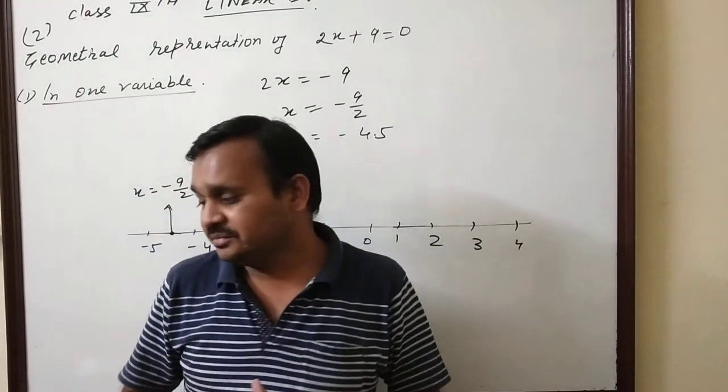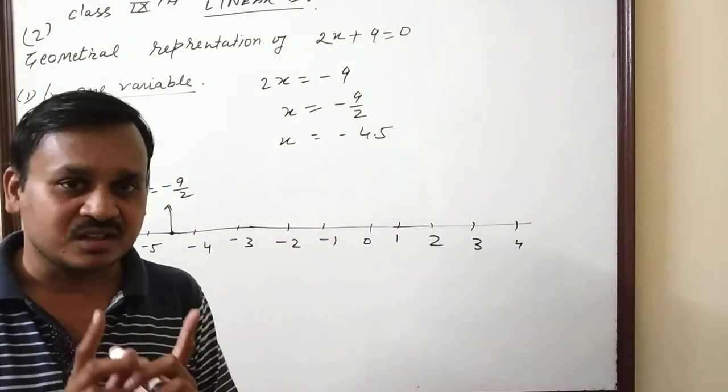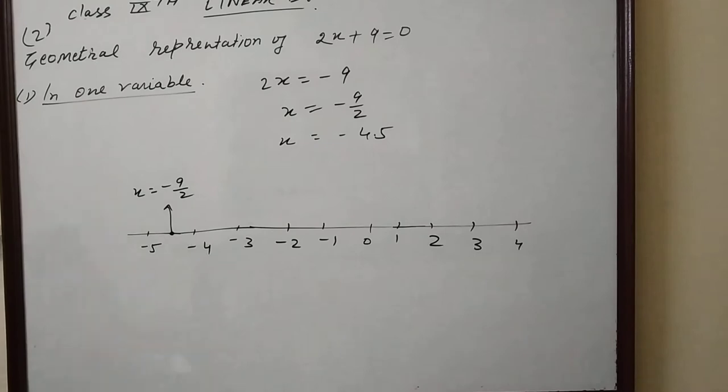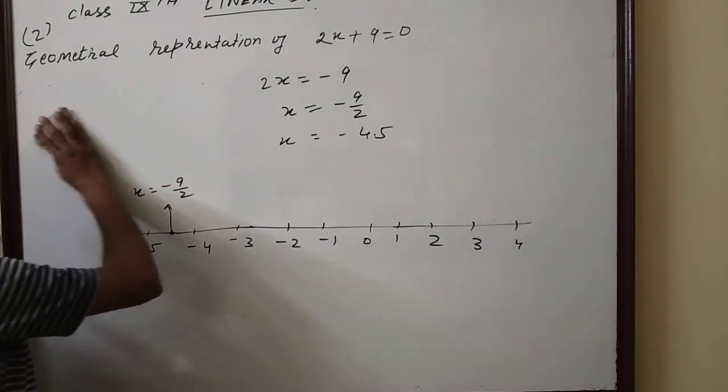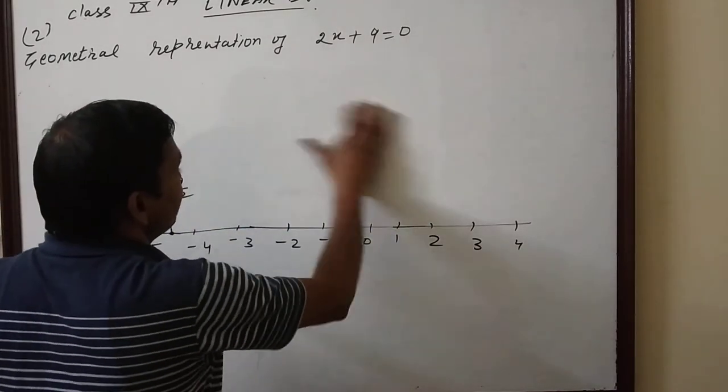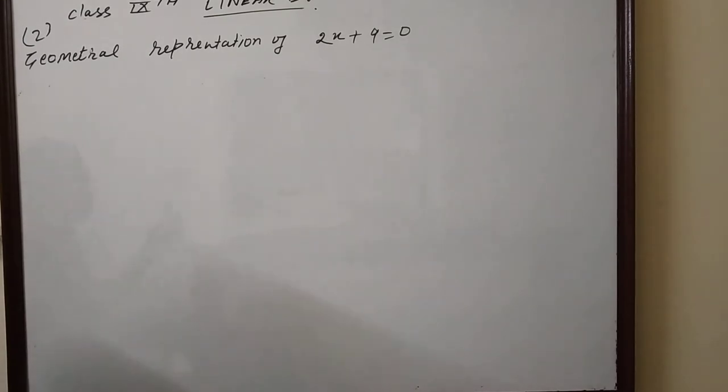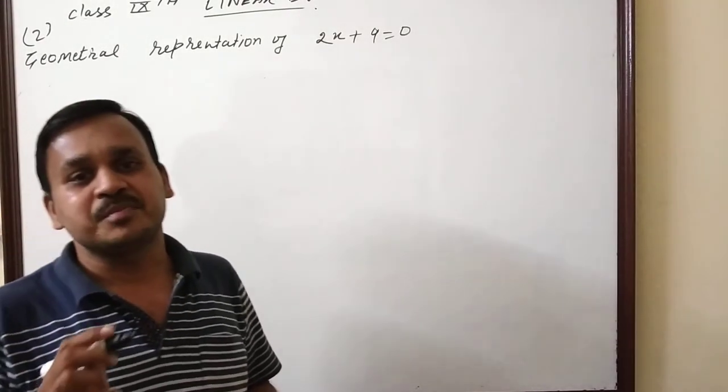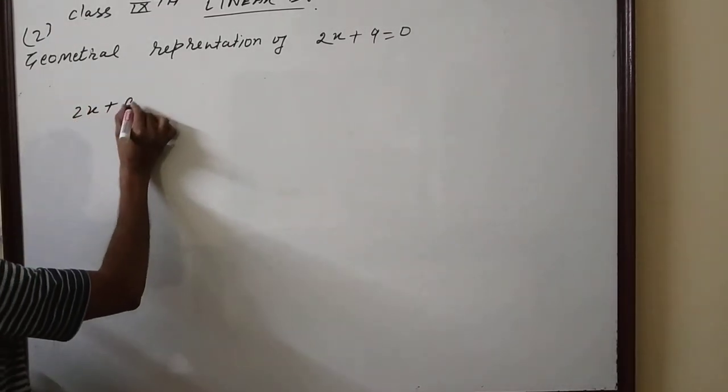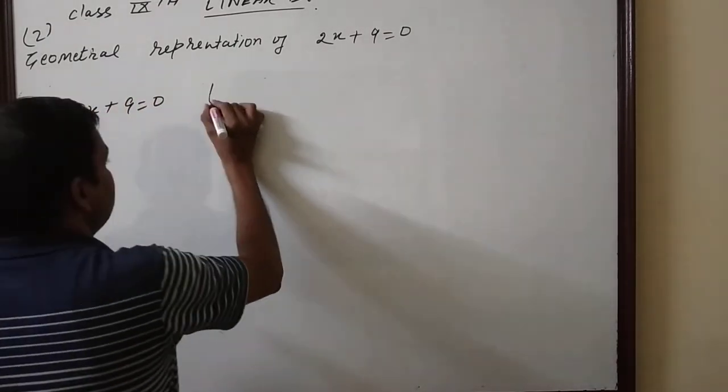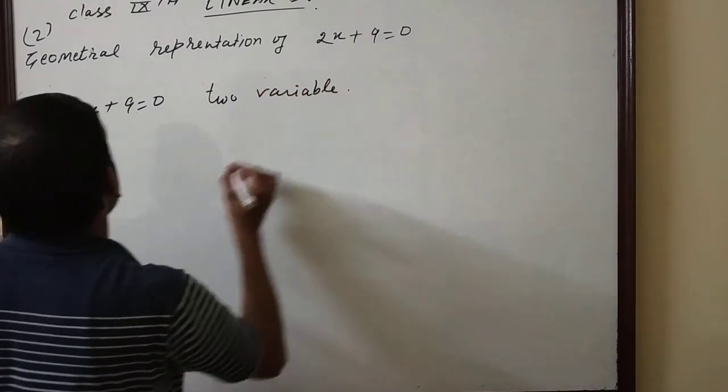Now we have two variables, so we move to that case. For the geometrical representation of 2x+9=0 in two variables, this is 2x+y=9 in two variables.